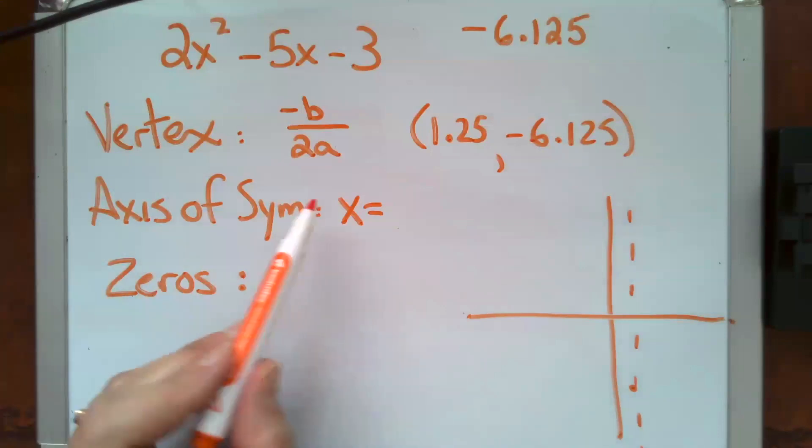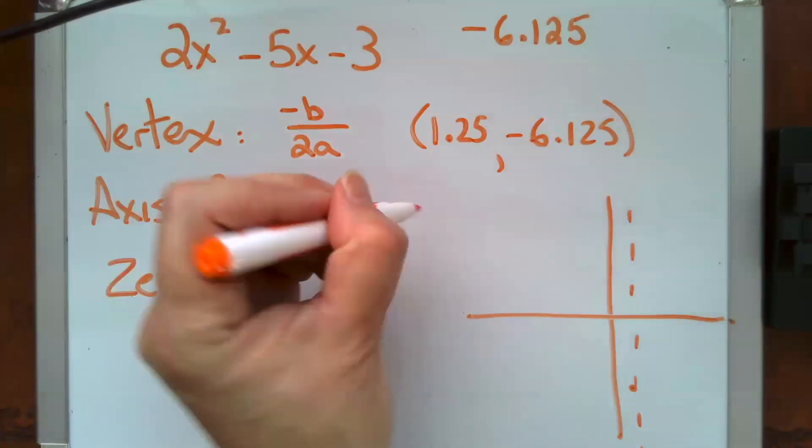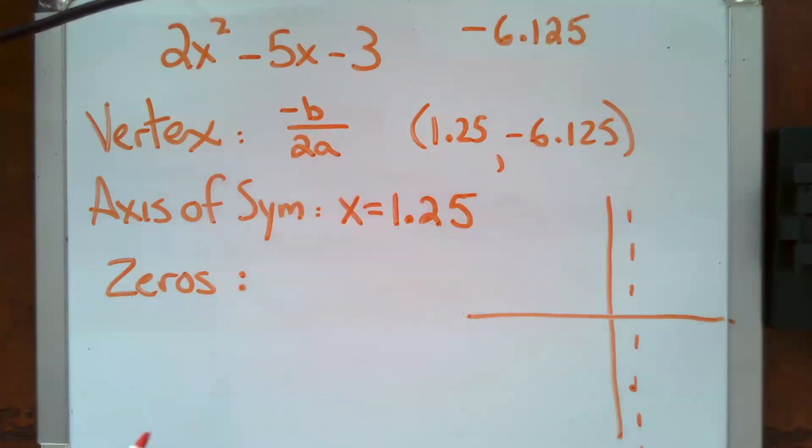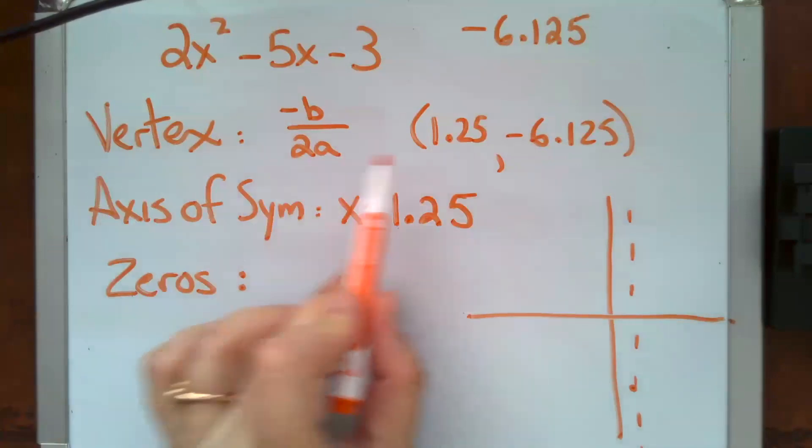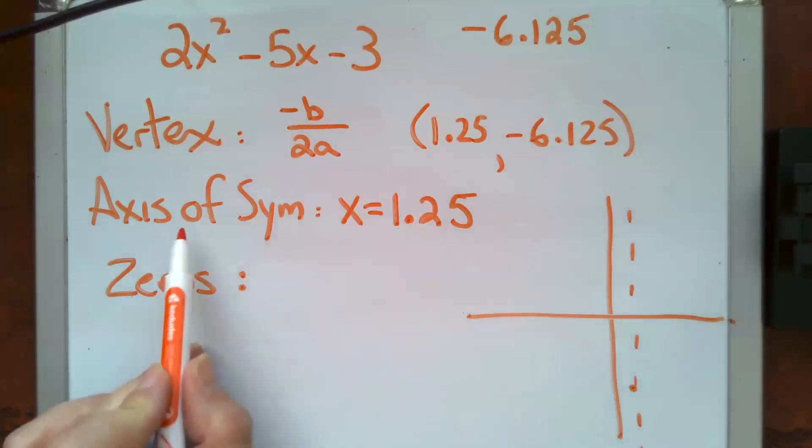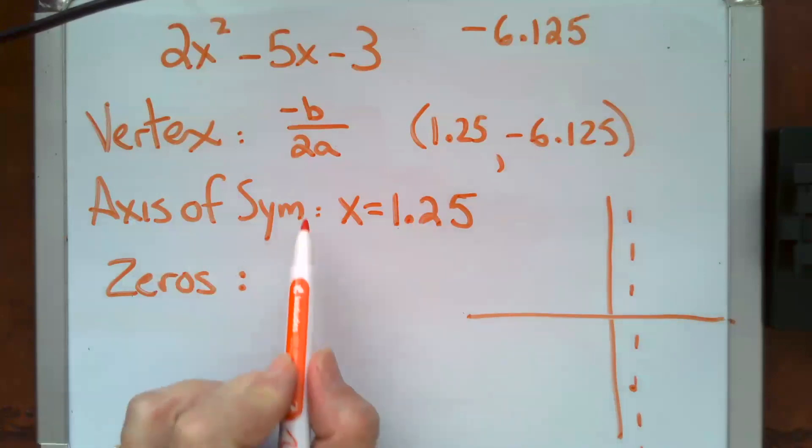So in this case, the axis of symmetry is x equals 1.25. So after you've done your good work in finding the x coordinate of your vertex, you have also found your axis of symmetry. You just need to write it in the form of a line, not in the form of a point.